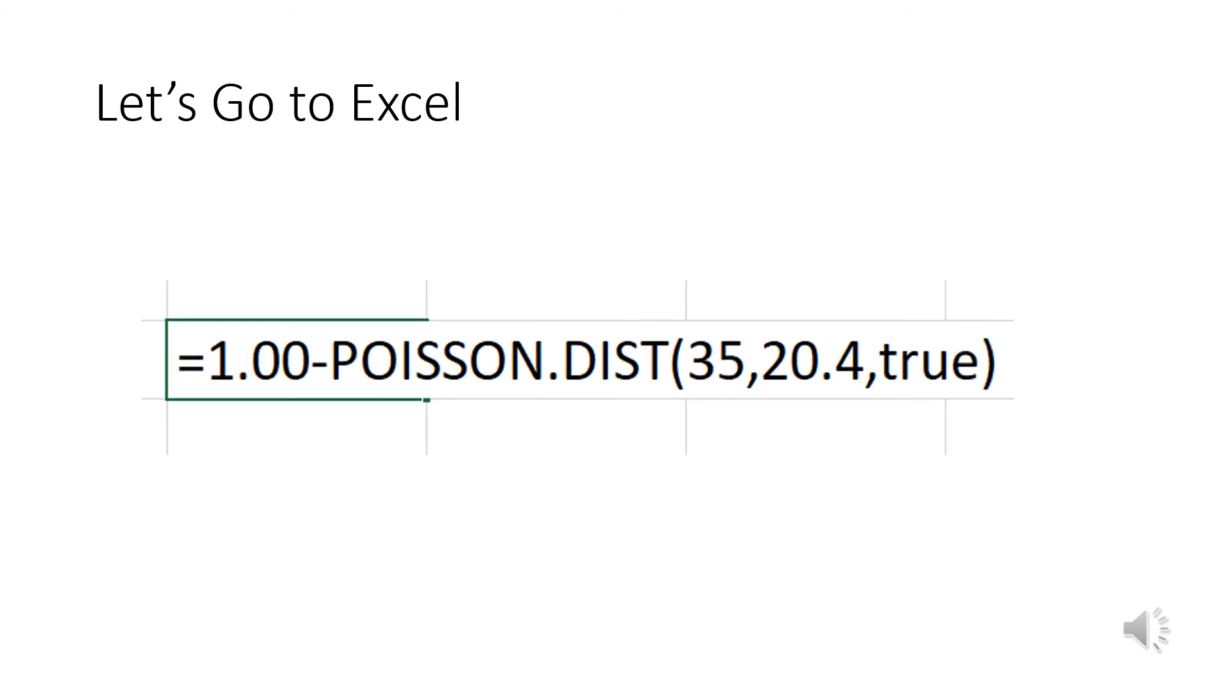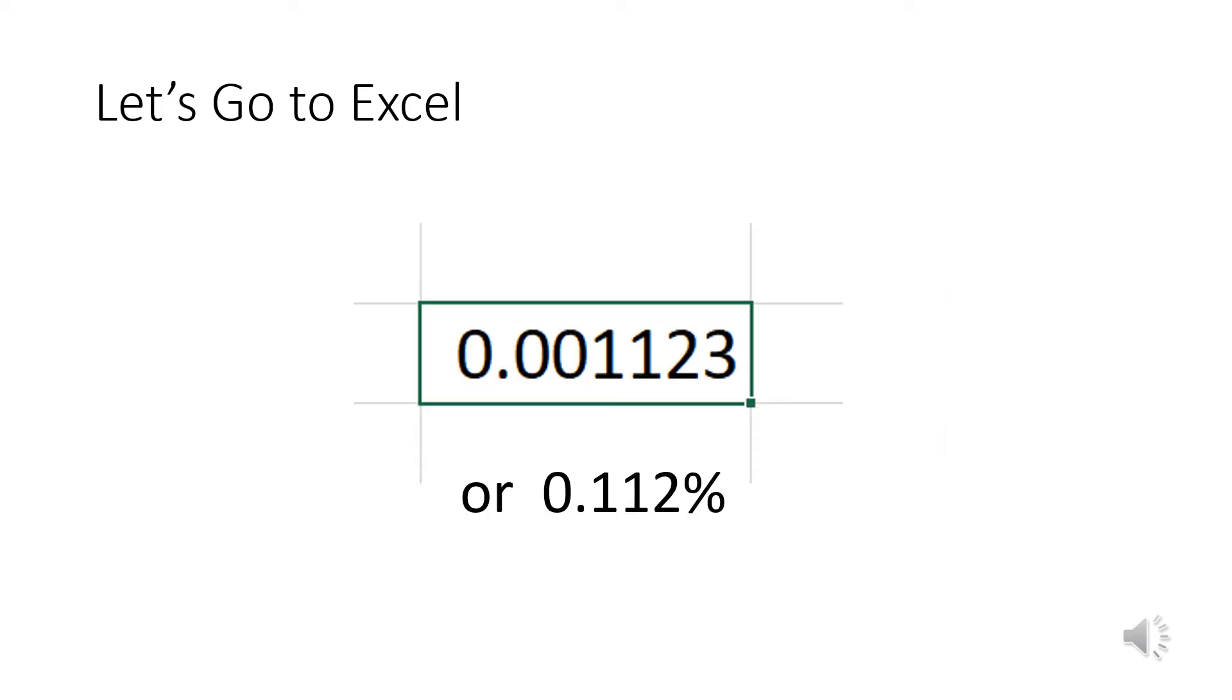What we're going to do now is we're going to take 1 minus what we had, and that'll be what's on the right of 35—35 and greater. So it's 1.00 minus POISSON.DIST.